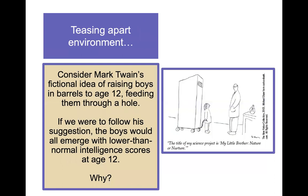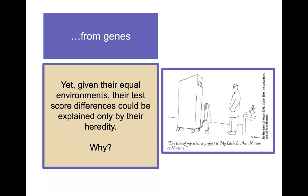Teasing apart the environment: consider Mark Twain's fictional idea of raising boys in barrels to age 12, feeding them through a little hole. If we were to follow his suggestion, the boys would all emerge with lower than normal intelligence scores at age 12, because they hadn't been exposed to anything environmental — they would be deficient in certain skills that we measure on intelligence tests. Yet, given their equal environments, their test score differences could be explained only by their heredity, because if the environment were held completely similar, differences in test scores would be attributable to underlying genetics.